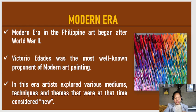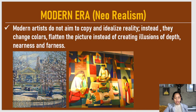Victorio Edades was the most well-known proponent of modern art painting. At first, his works were initially rejected and misunderstood, but later on, his modernist sensibility was shared by several artists. In this era, artists explored various mediums, techniques, and themes that were at that time considered new.